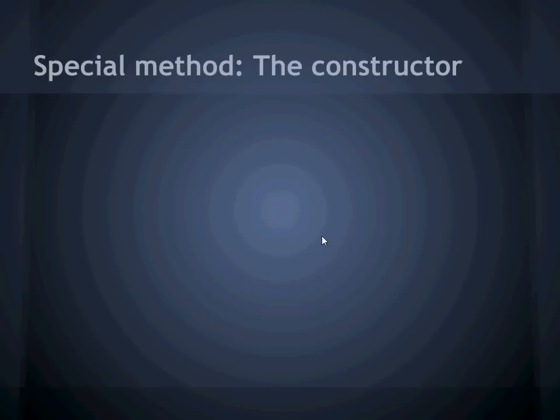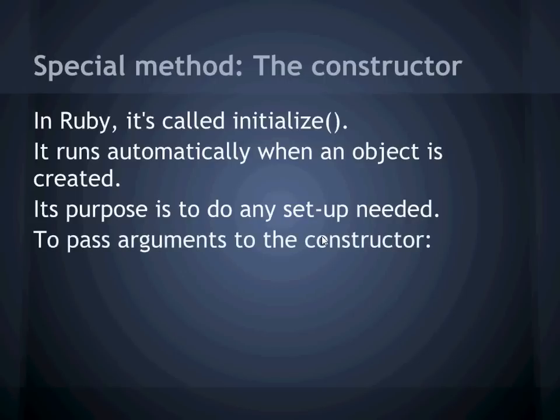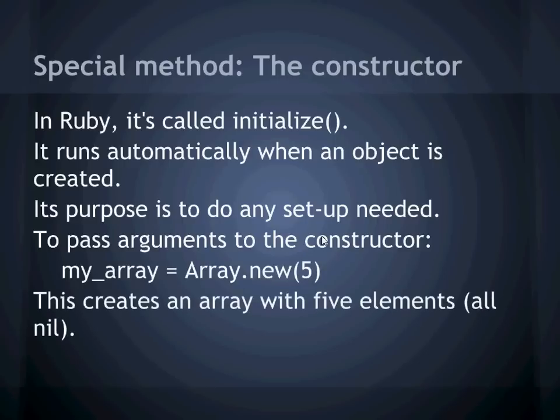There's a special instance method we should talk about called a constructor. Different languages have different mechanisms for defining these. In Ruby, the constructor is an instance method called initialize. Whenever an instance of the class is created, initialize runs automatically. It's supposed to do whatever setup is needed. Usually it sets starting values for any instance variables. You can have parameters to initialize. If you do, then you also need to pass those parameters into new, like this. Here the five will be passed to initialize. In this case, it creates an array that starts out with five nil elements in it.